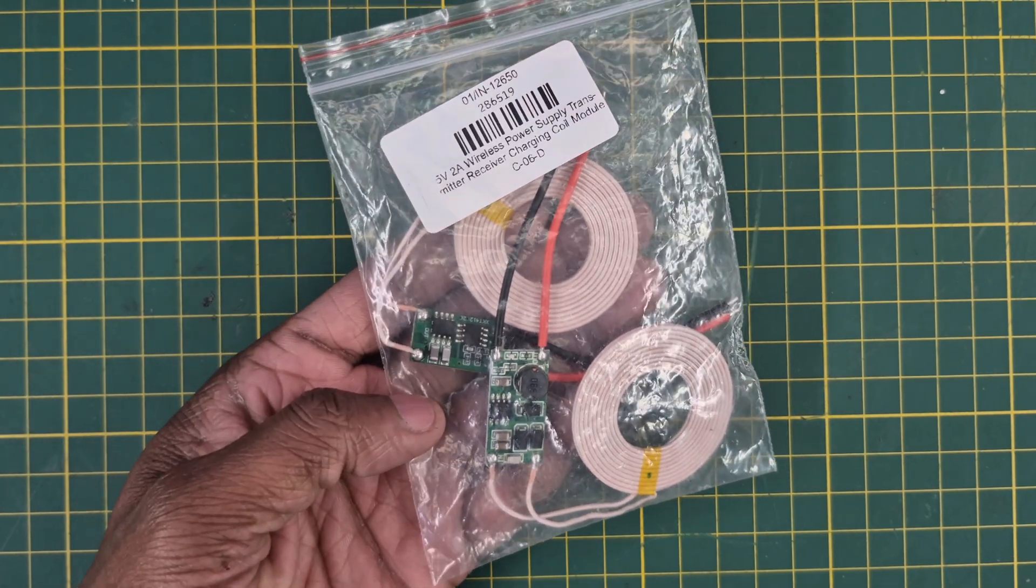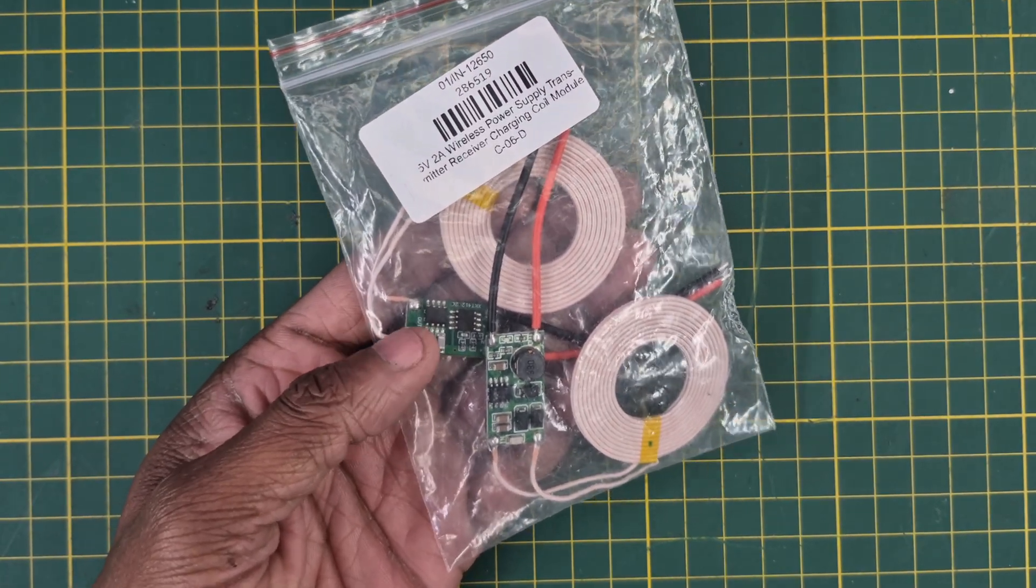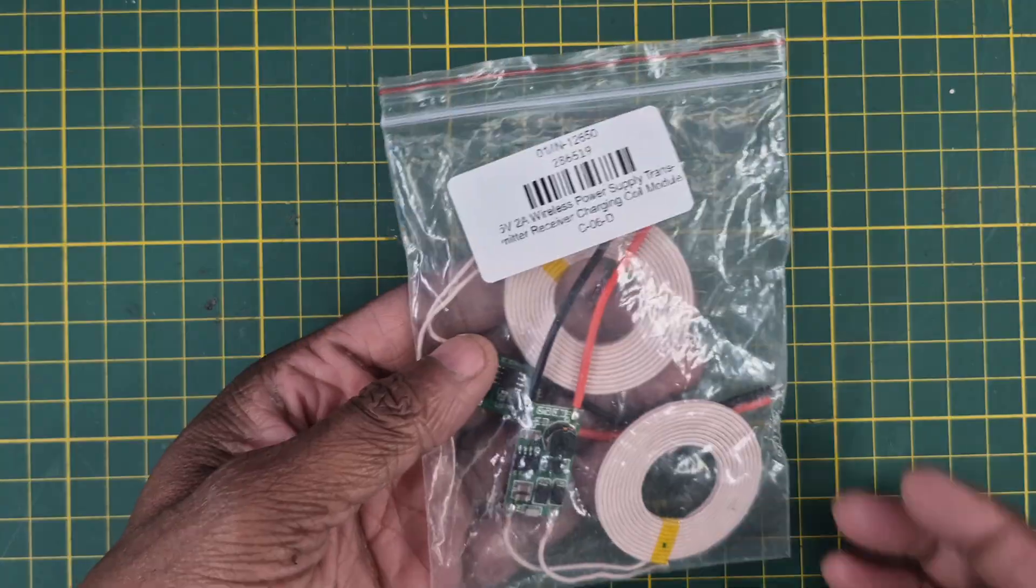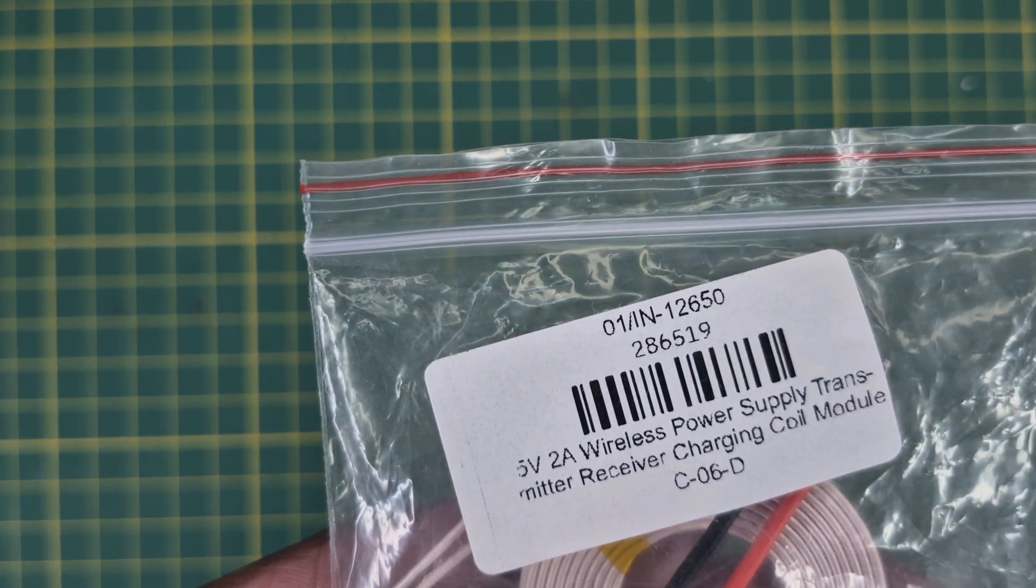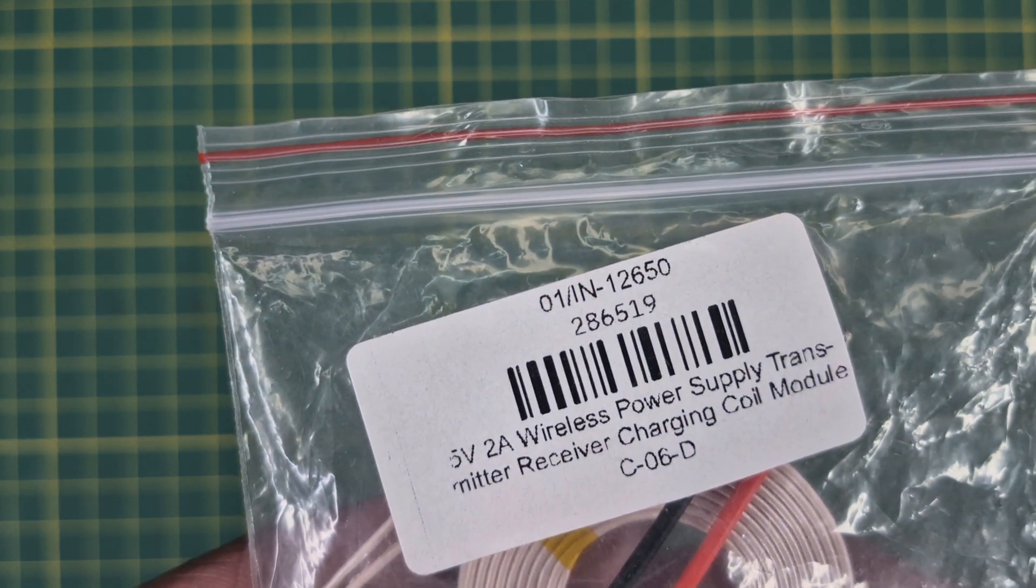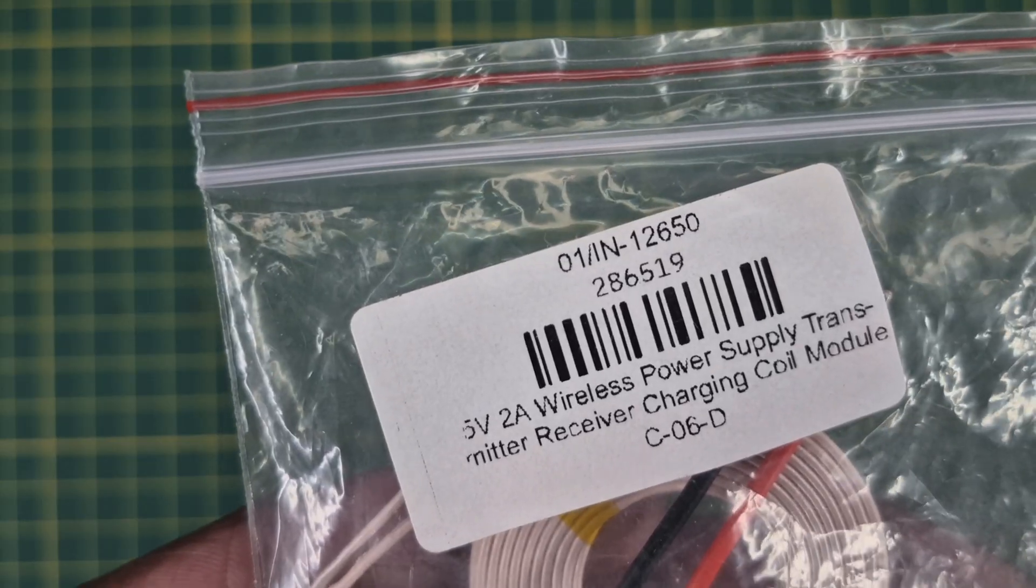Hello everyone, in this video we will review this wireless power transmitter and receiver. You can see this is a 5 volt 2 amp wireless power supply transmitter and receiver charging coil module.